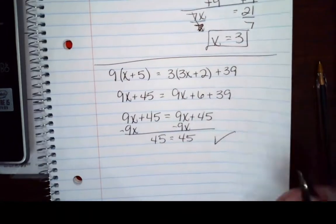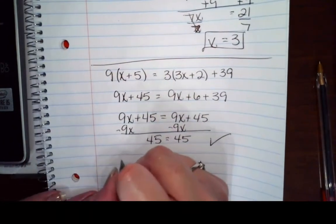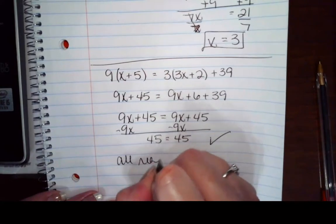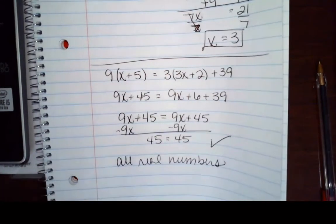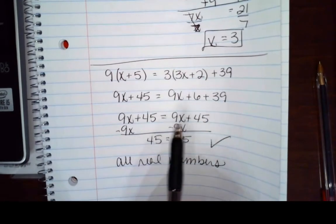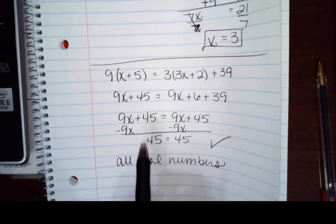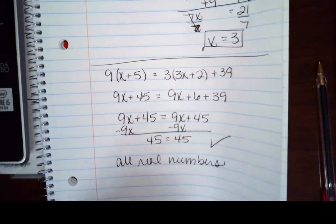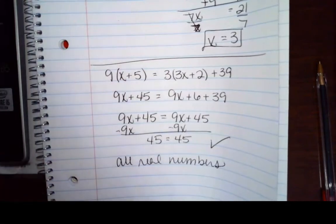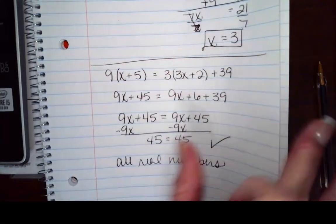So since this is true, that means you have all real numbers. Your variables fell off, but the resulting statement is true, which means I can put any value for x in there and it's going to work. So your solution set is all real numbers because 45 equals 45 and your variables fell off.